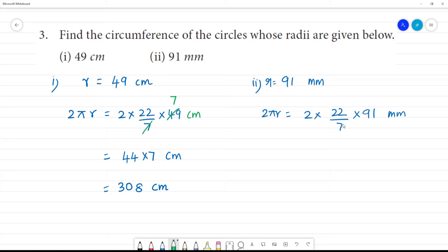So cancel: 91 divided by 7 is 13. 7 goes into 9 once with remainder 2, 7 into 21 is 3. So this is equal to 2 × 22 is 44, 44 multiplied by 13.